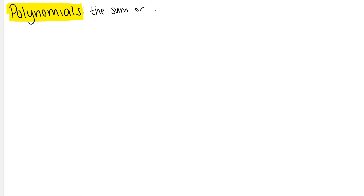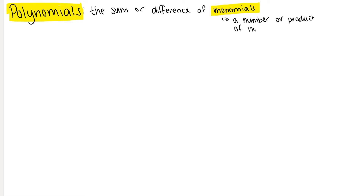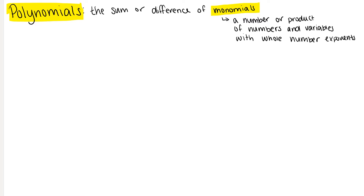First, let's define polynomials. A polynomial is the sum or difference of monomials. A monomial is just a number or product of numbers and variables with whole number exponents.